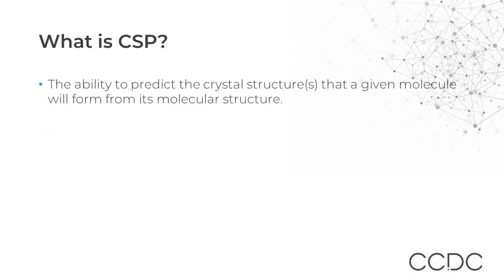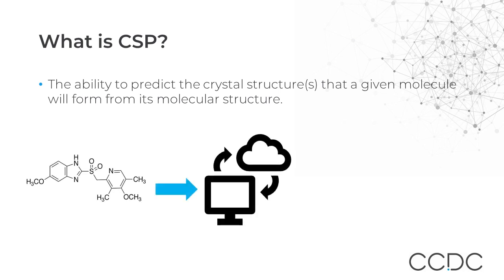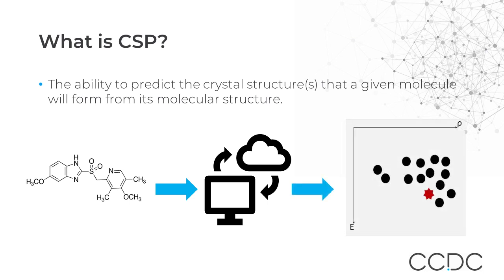Crystal Structure Prediction, or CSP, is defined as the ability to predict crystal structures that a given molecule will form from its molecular structure. Most methods of CSP use informatics and computational science techniques in combination with intensive computational resources. Typically, we start from a 2D chemical representation of a molecule, build a molecular model, and then use advanced search techniques to generate plausible crystal structures that we can visualize based on their energy and density.